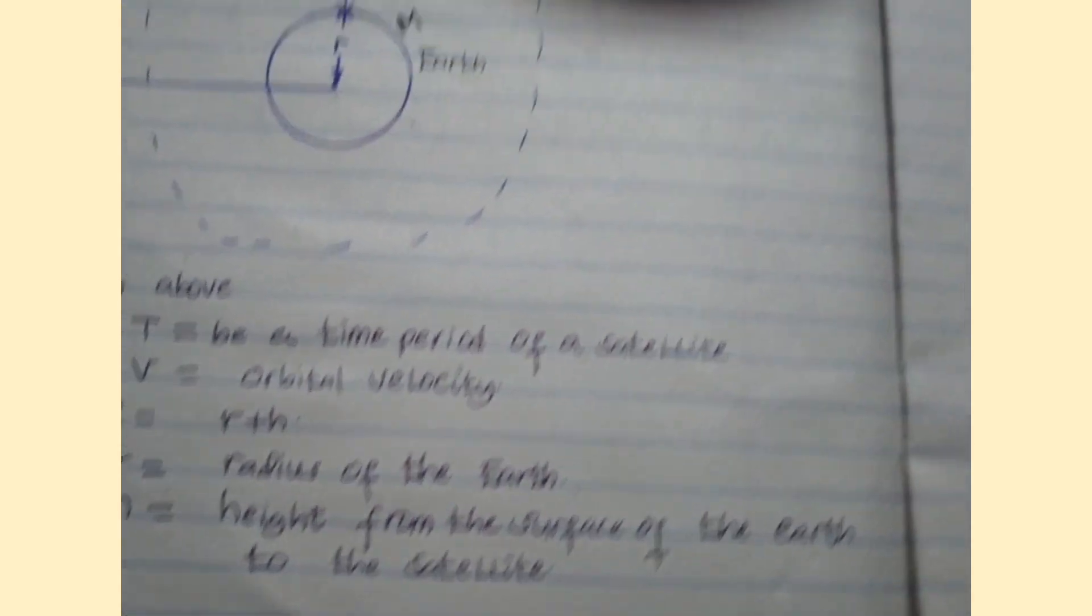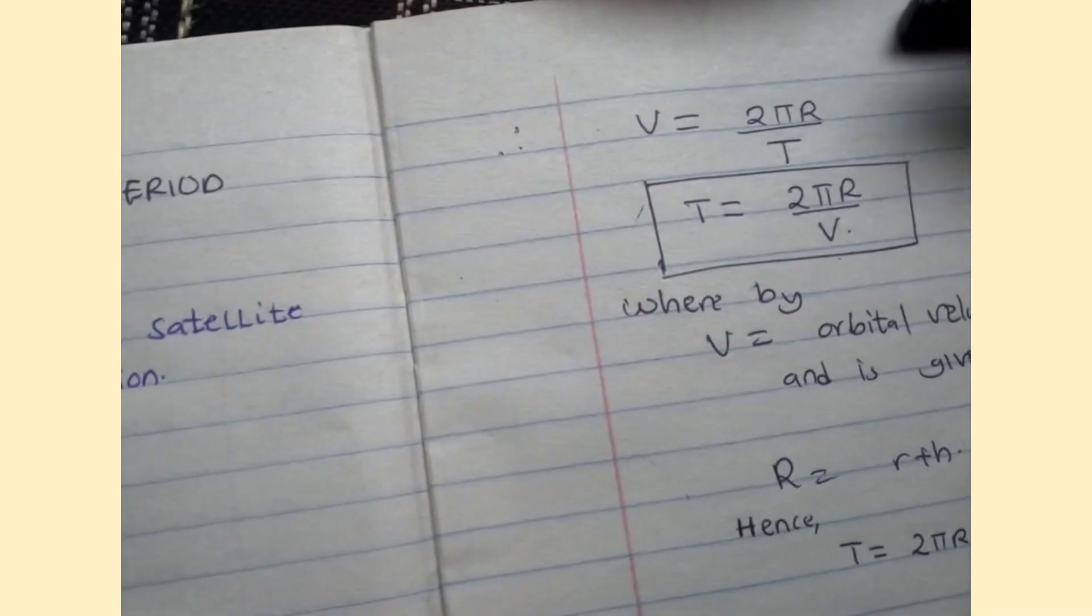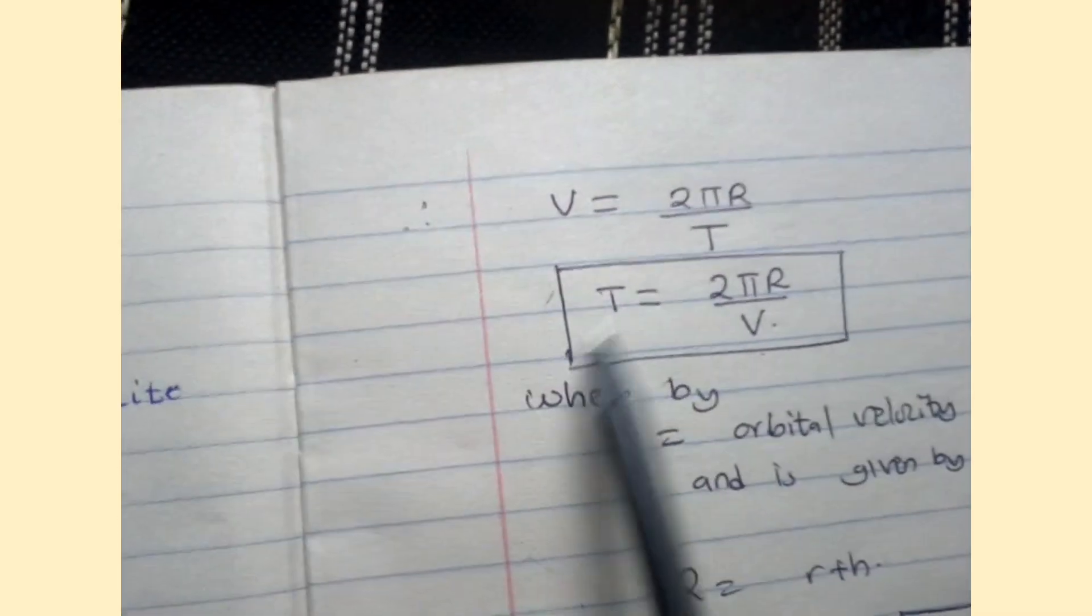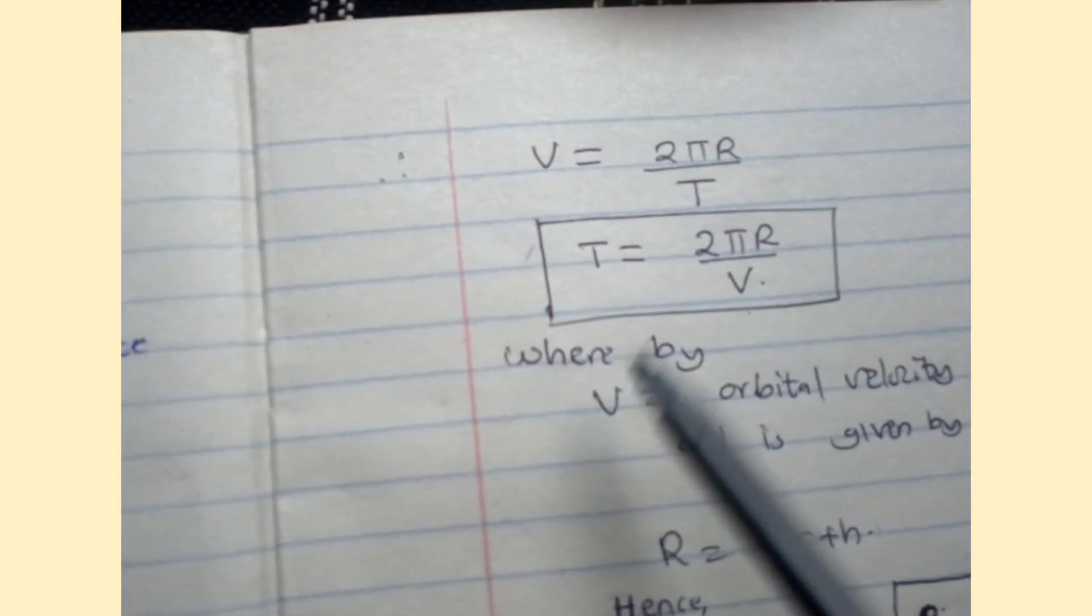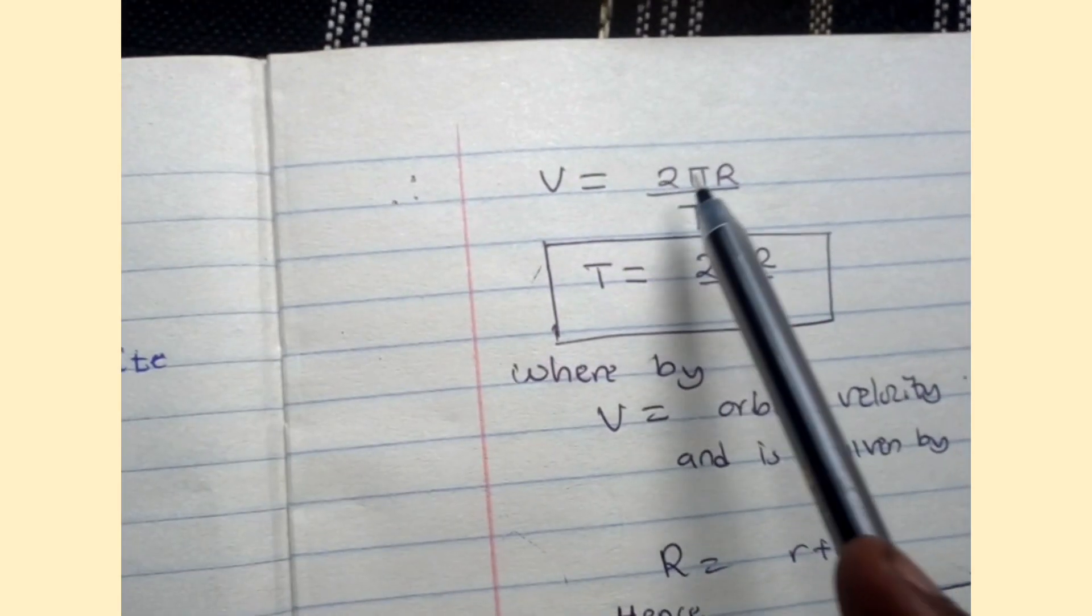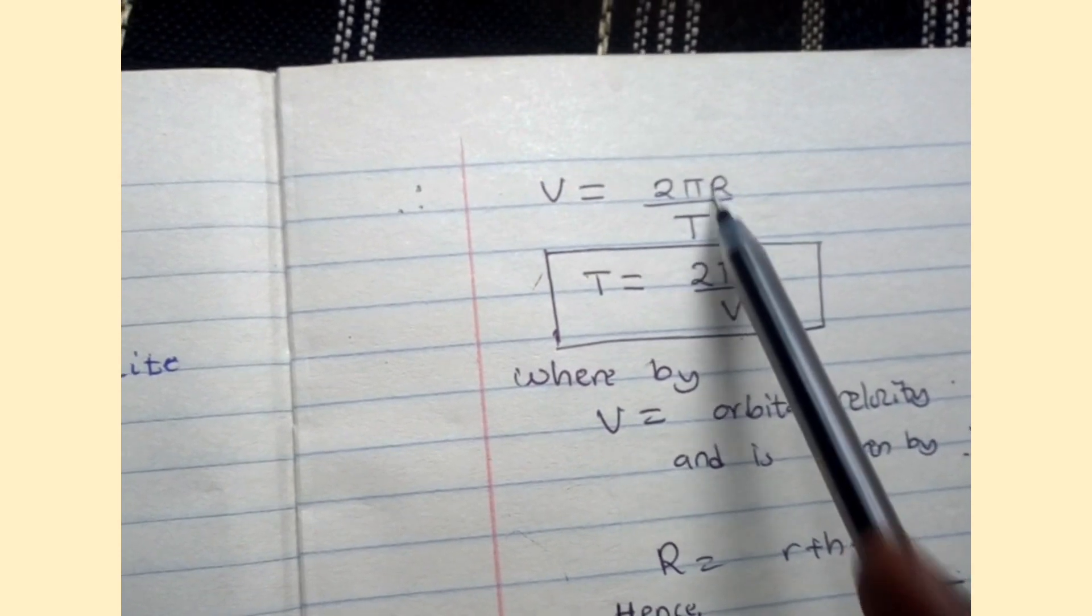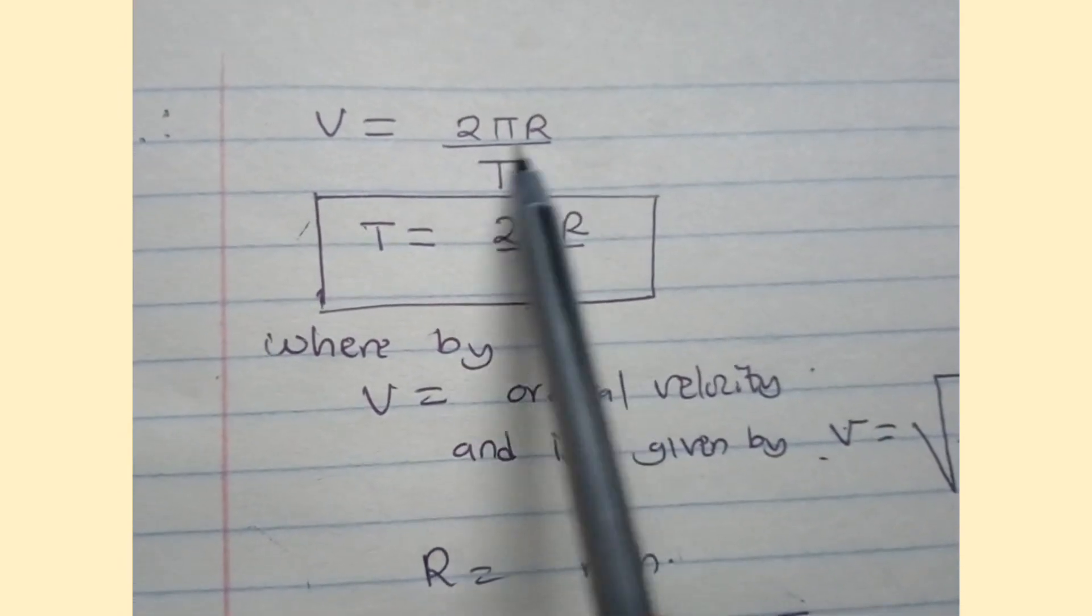This distance along the circle equals the circumference of the circle. This circumference from mathematics is given by 2π times capital R.